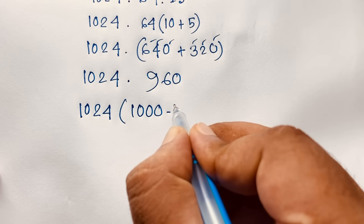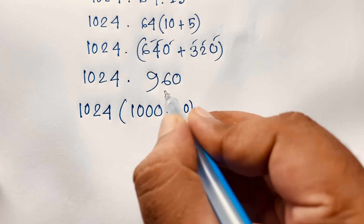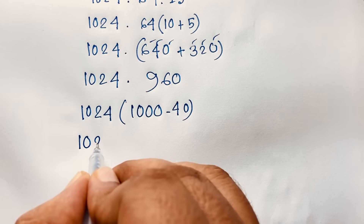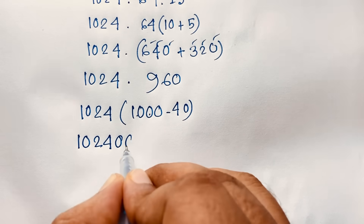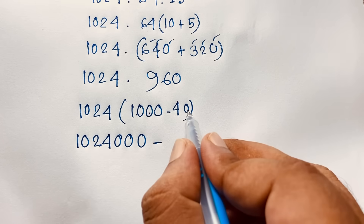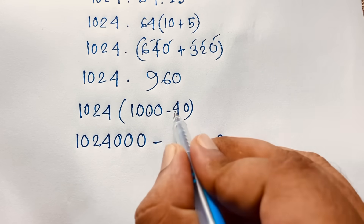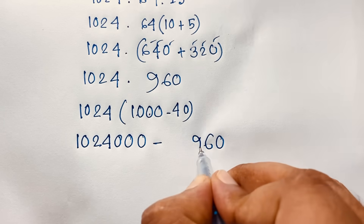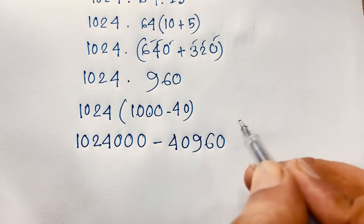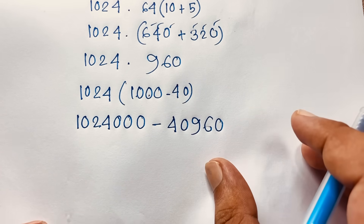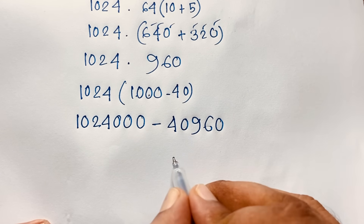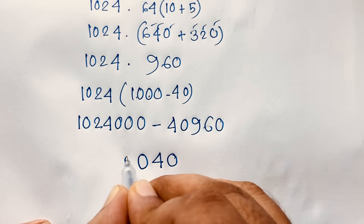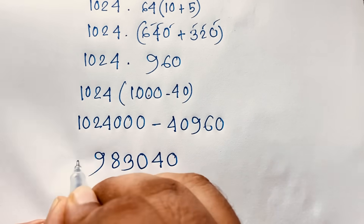Now computing 1024 times 960 step by step: carrying through the multiplication with the digits, the final answer is obtained. This is our final answer to the math olympiad question.